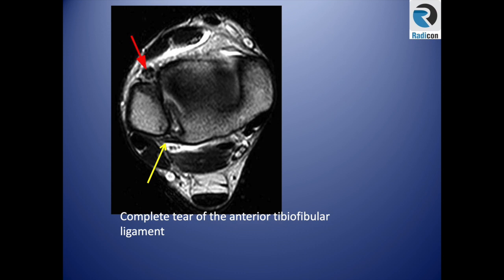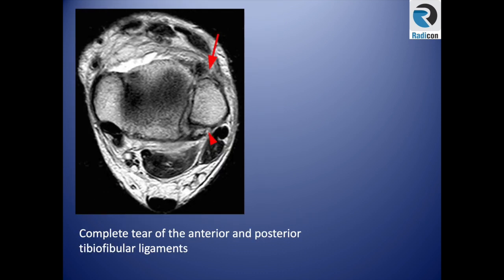Another case: on the axial image at the level of the D-shaped fibula — at the level of the syndesmosis — there is complete disruption of both the anterior and posterior tibiofibular ligaments, indicating very high instability of the syndesmosis.